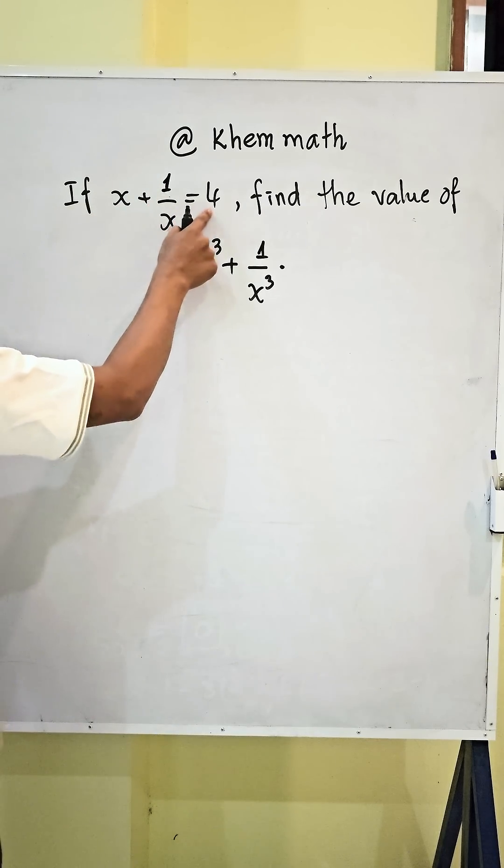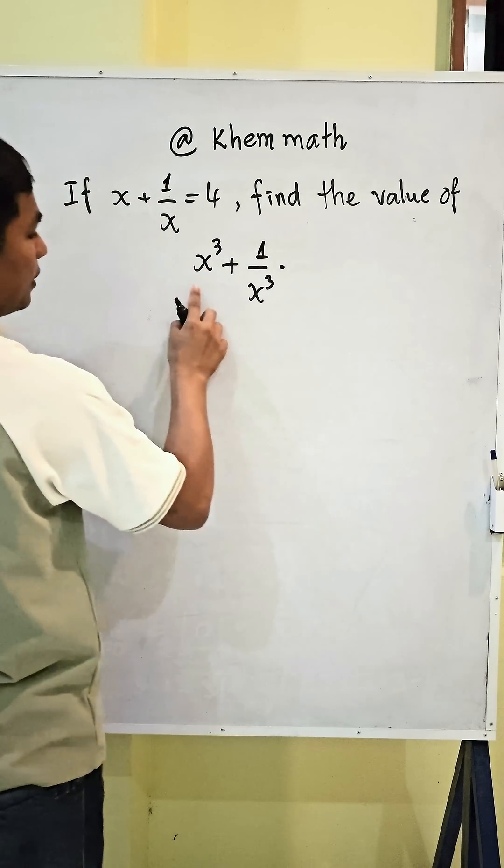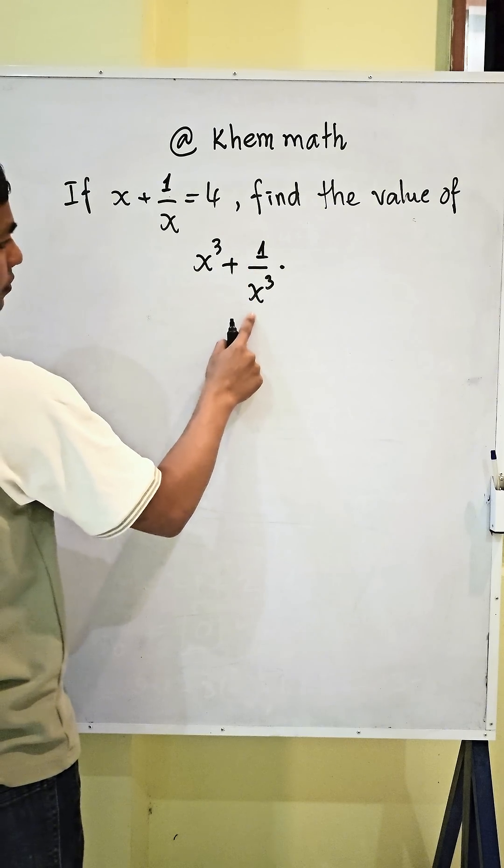If x plus 1 divided by x equals 4, find the value of x power 3 plus 1 divided by x power 3.